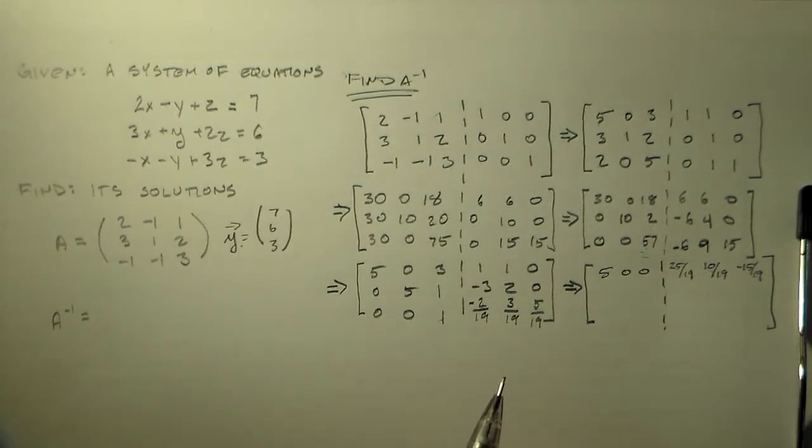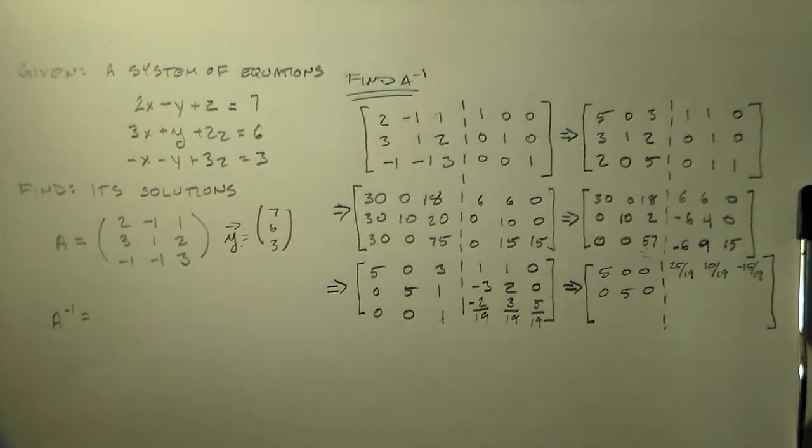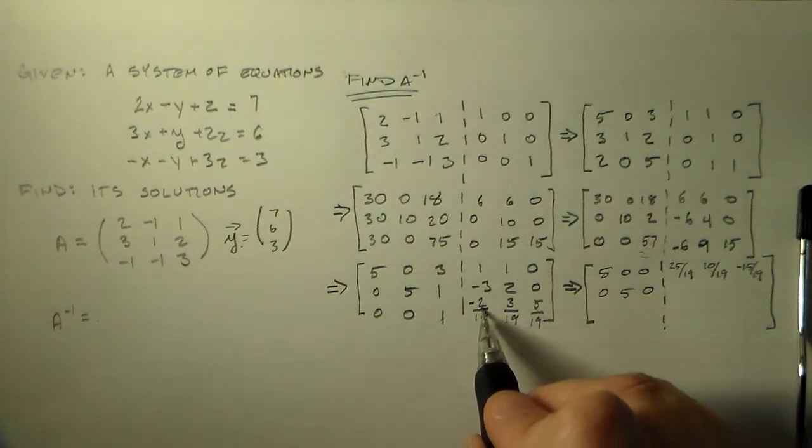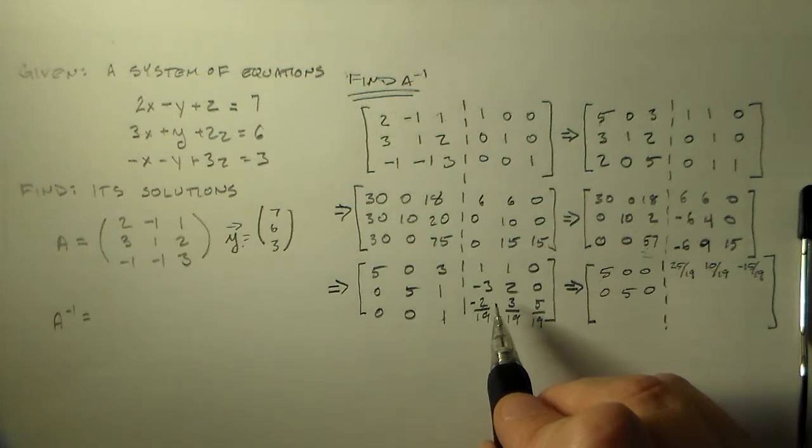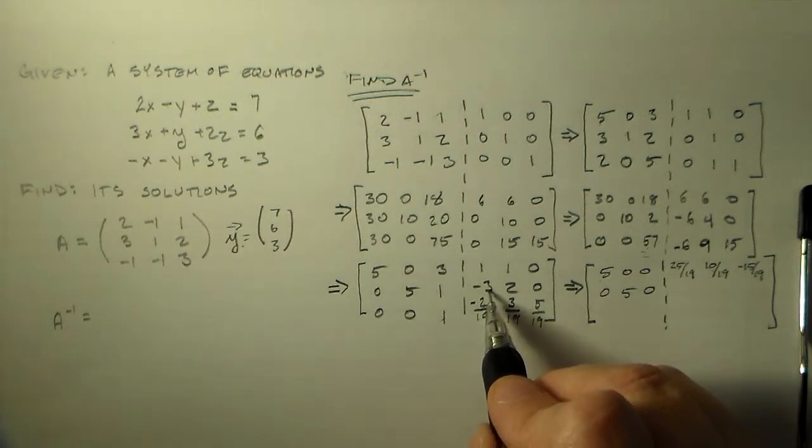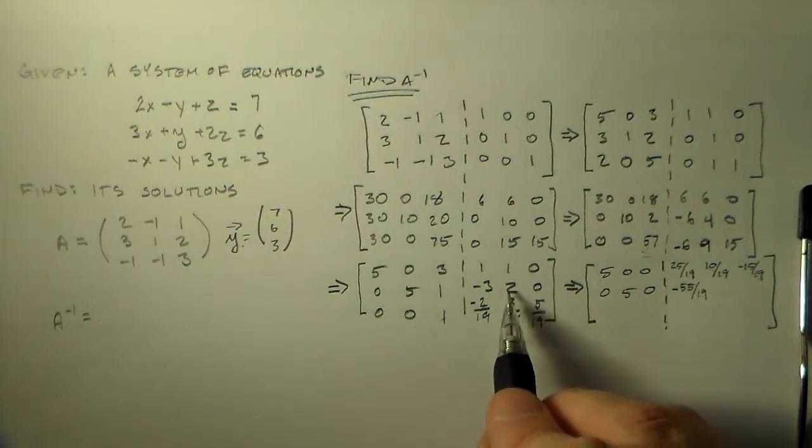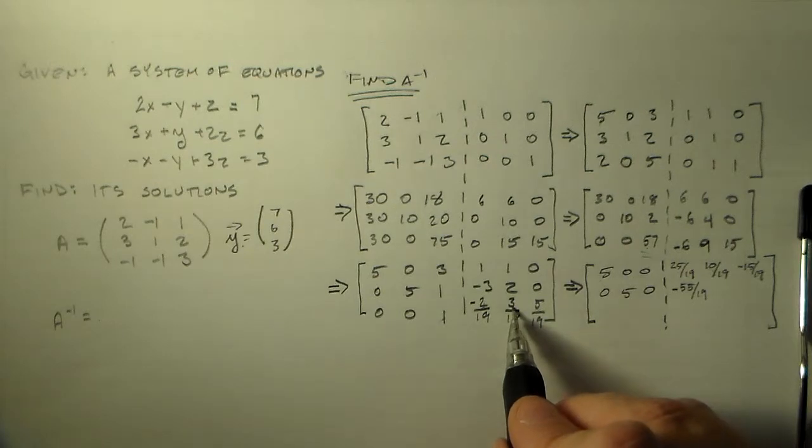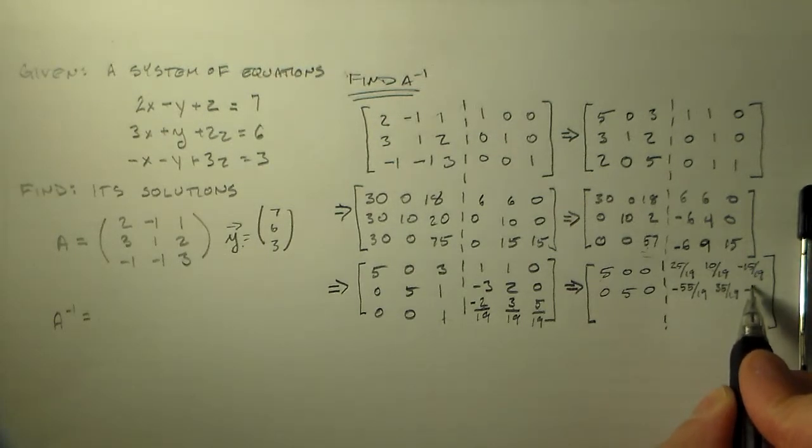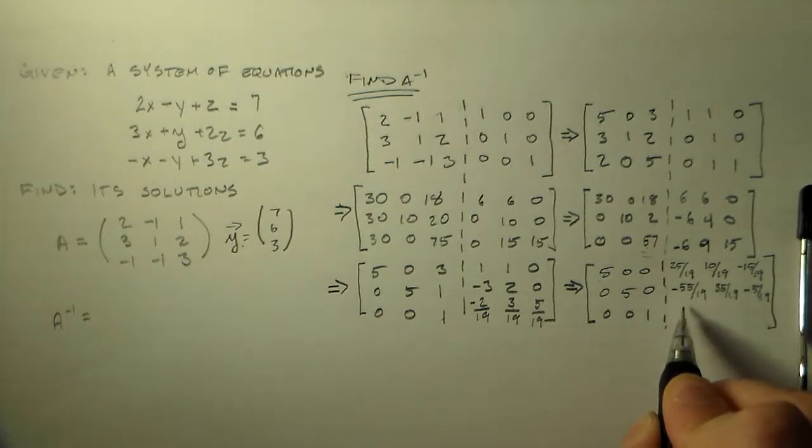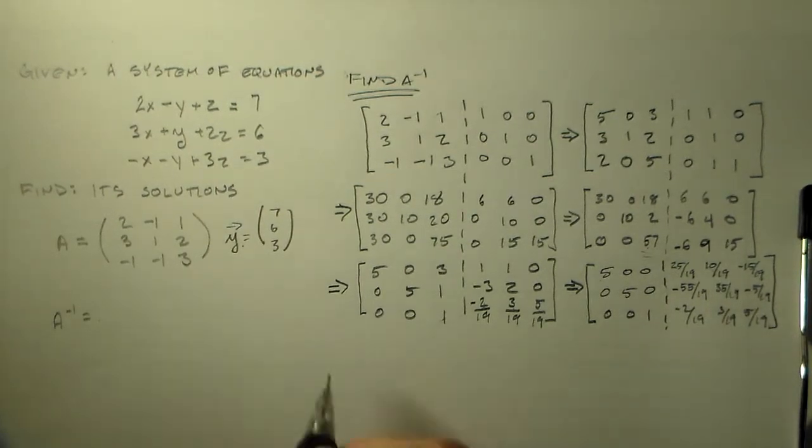We can live with that. So we'll divide that guy by 57. We'll divide him by 2. We'll divide him by 9, I think. 9 will do. Let's divide this guy by 6. Okay, so 30 divided by 6 is 5, 0, 18 divided by 6 is 3, 6 and 6 is 1, 1, 0. Divide this by 2, we have 0, 5, 1, minus 3, 2, 0. Divide everything here by 57: 0, 0, 1. Oh, that looks good so far. 57 divided by minus 6 is minus 2/19, 9 is 3/19, 15 is 5/19. Okay, that's not so beautiful.